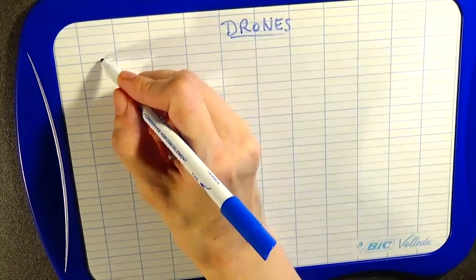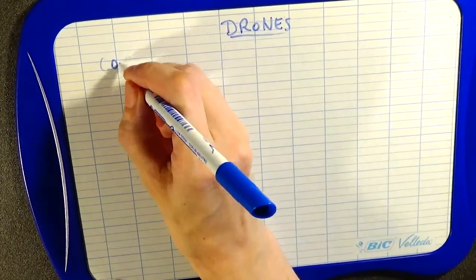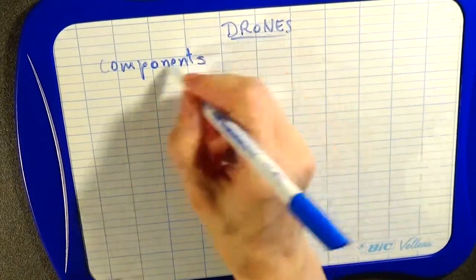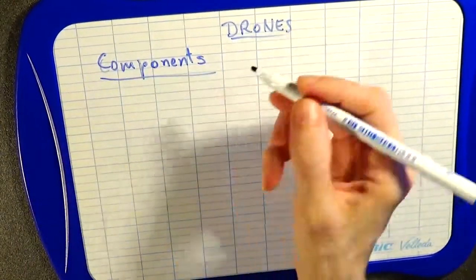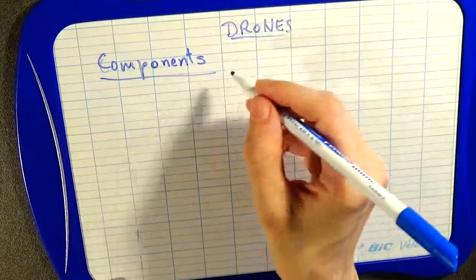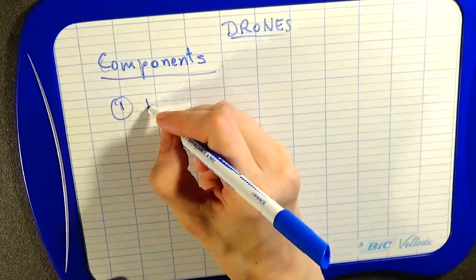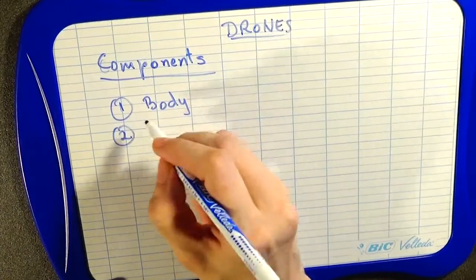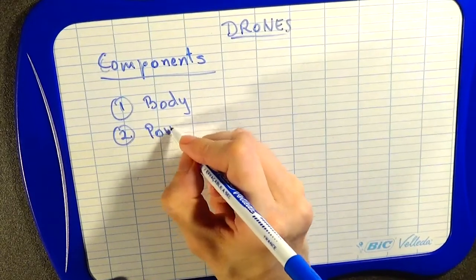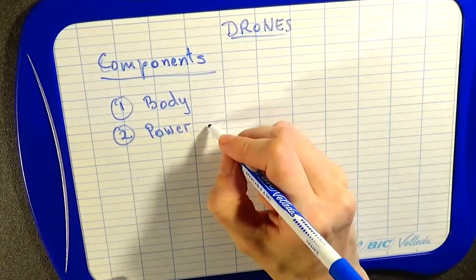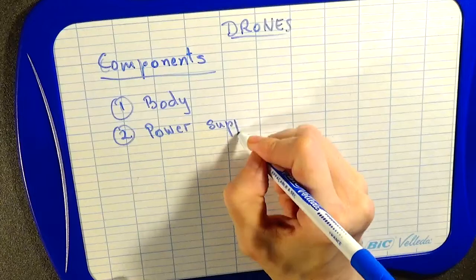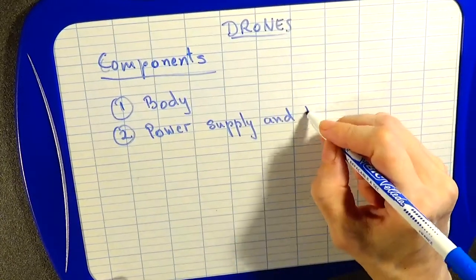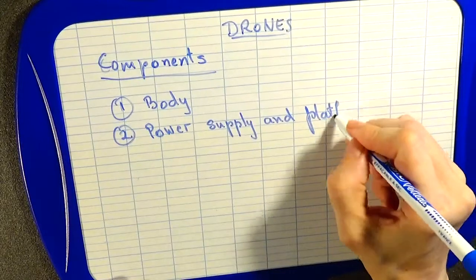Let's see what the components of a drone are: the body, power supply, and platform.